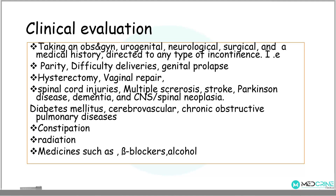When a patient presents with urinary incontinence, the clinician will take an obstetric and gynecologic history, a urogenital, neurologic, surgical, and medical history directed to the type of incontinence. You need to note the parity of the woman, the difficulty of previous deliveries, history of genital prolapse, hysterectomy or vaginal repair, spinal cord injuries, presence of multiple sclerosis or stroke, neurogenic problems such as Parkinson's disease, dementia, CNS neoplasias, diabetes mellitus, cerebrovascular problems, chronic obstructive pulmonary disease, constipation history, radiation, and use of medicines such as beta-blockers and alcohol.